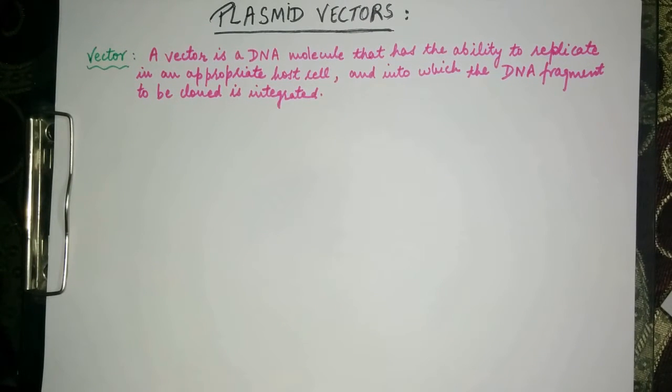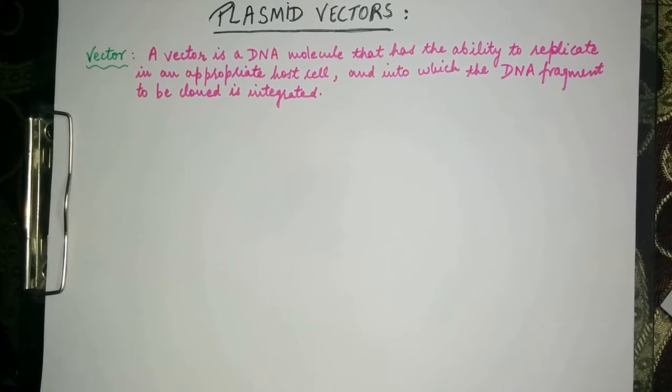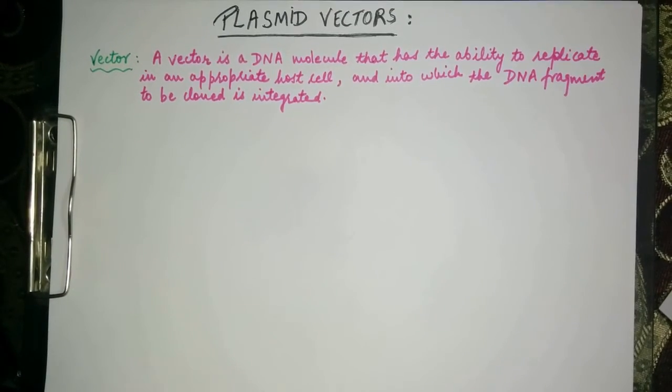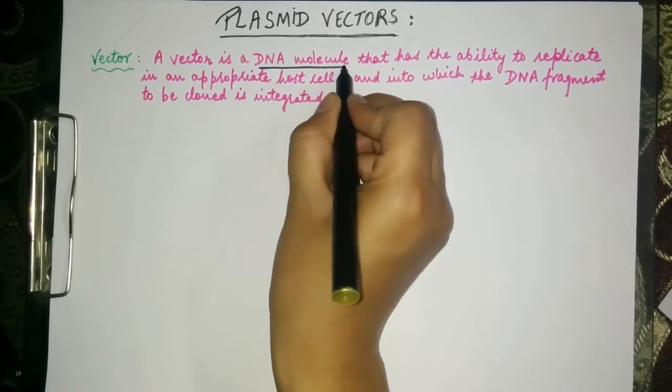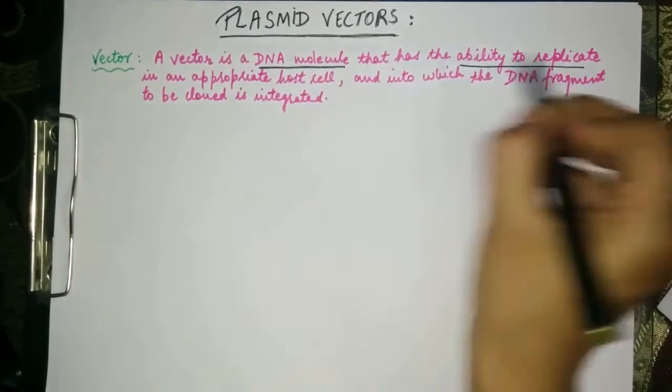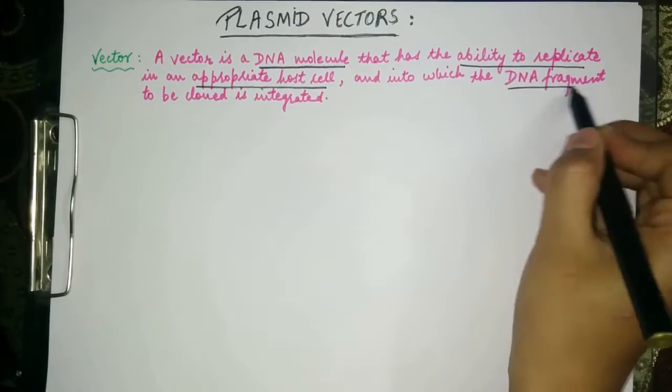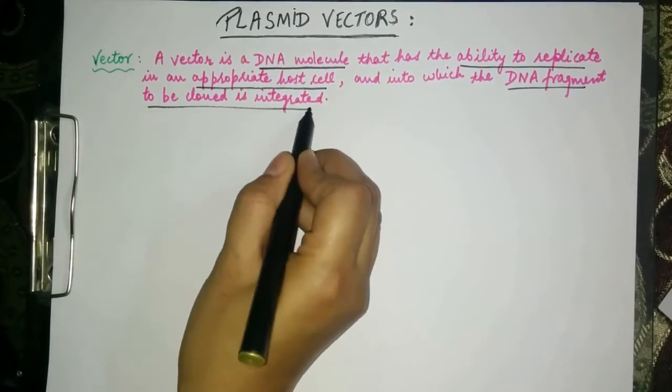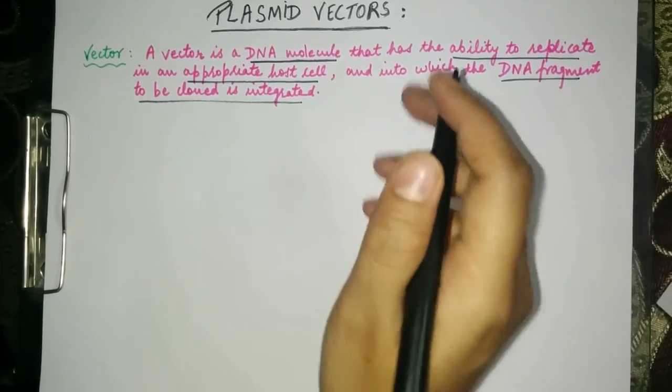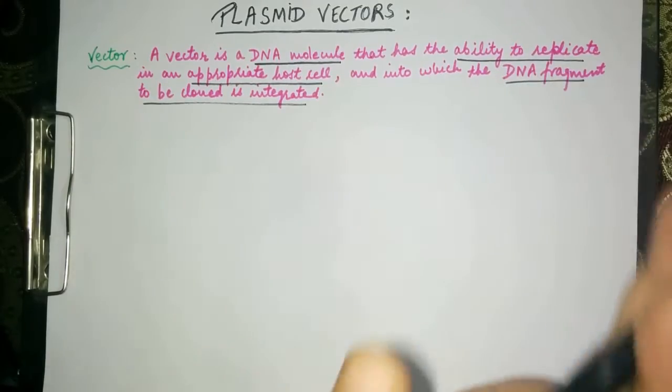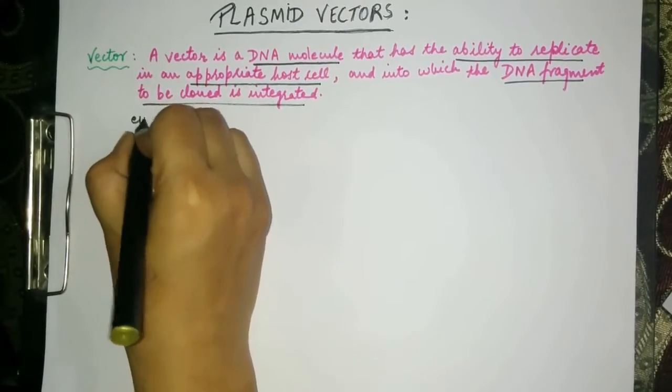In this tutorial we are going to learn about plasmid vectors. First let's see what a vector is. A vector is a DNA molecule that has the ability to replicate in an appropriate host cell and into which the DNA fragment to be cloned is integrated. Any extra chromosomal small genome may be used as a vector, such as plasmids, phages, and viruses.